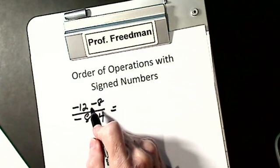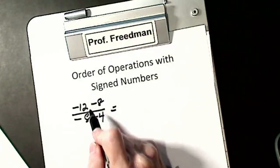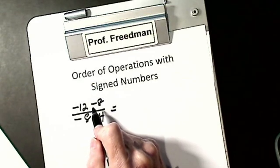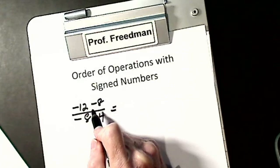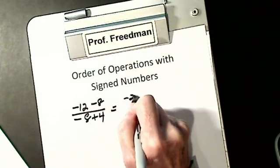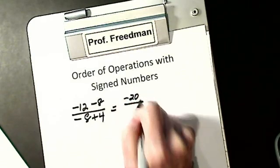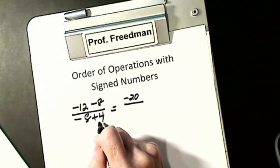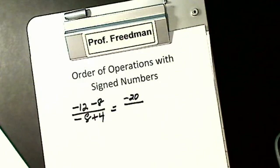I look at my numerator — that's addition-subtraction. If the signs are alike, add and take the same sign, so I get negative 20. I look at my denominator — addition-subtraction. The signs are different: subtract, take the sign of the larger.